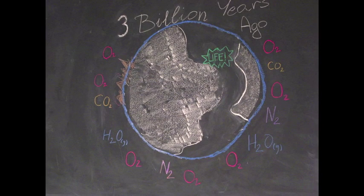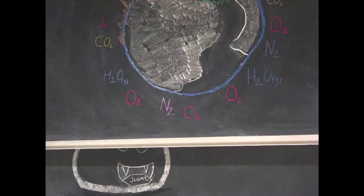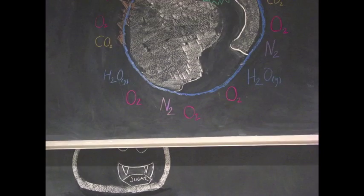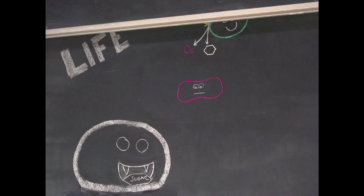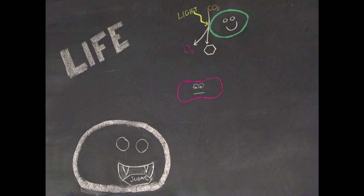The first forms of life consisted of cells that were anaerobic and consumed other organic material for energy. As time passed, various specialized traits emerged, such as the ability to perform aerobic respiration and photosynthesis.